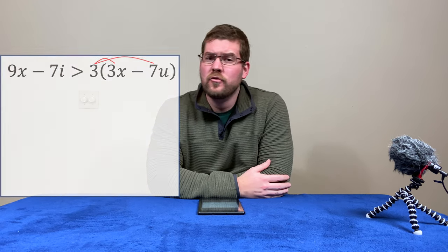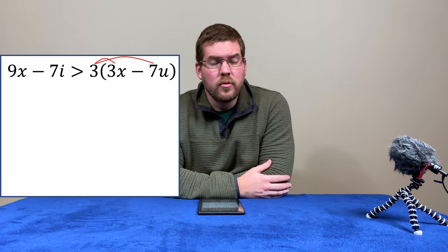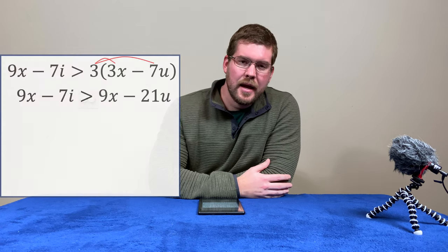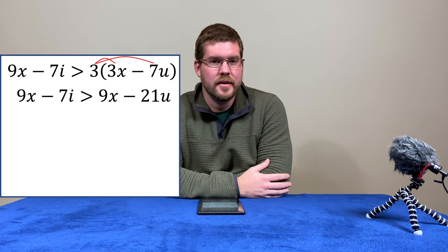So first step here is we distribute the 3 to the 3x and the 7u. We're left on the right-hand side, 9x minus 21u.